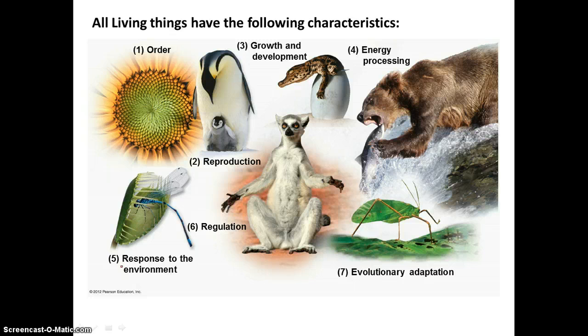If you can remember, the definition of life is that all living things have the following characteristics. One, they have order or structure — in other words, they're all composed of cells. All living things reproduce. All living things grow and develop. They use energy — for example, plants make food by photosynthesis and break down that food by cellular respiration. So all living things need that input of energy.